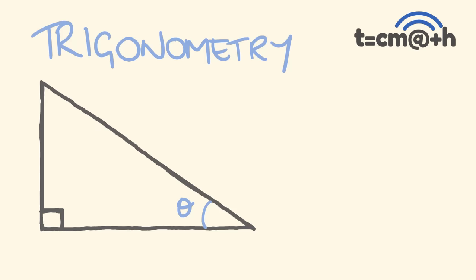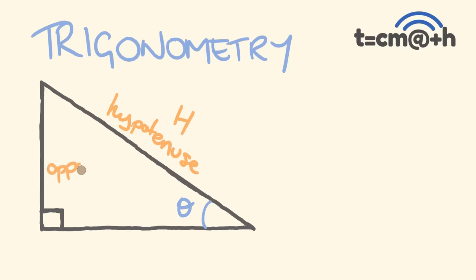The first thing we have to do is label the sides of this triangle. In this triangle, you'll notice we've got a right angle and angle theta. We also have three sides. The longest side is called the hypotenuse — I'll put that down as H. Here we have the opposite side, meaning this side is opposite theta — we put that down as O. And this remaining side, which is next to theta, is the adjacent — adjacent means next to — and we label that with an A.